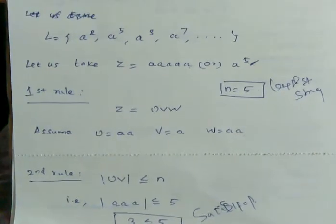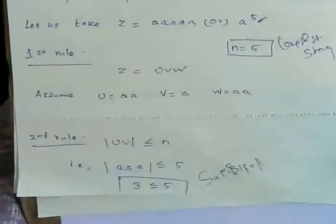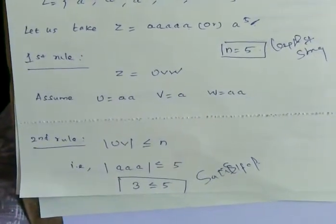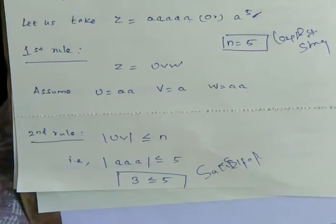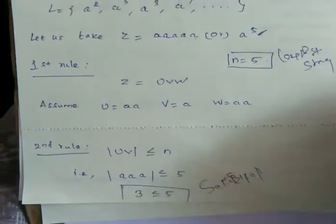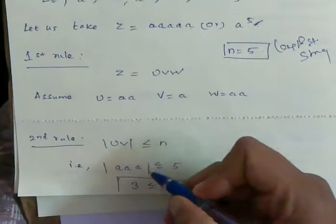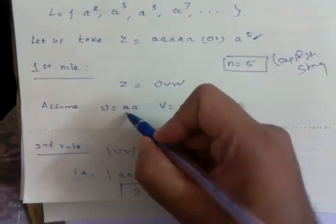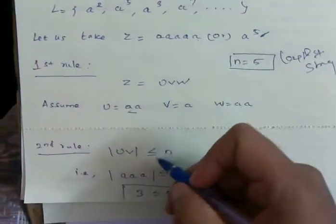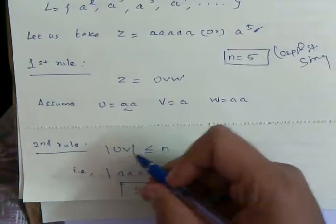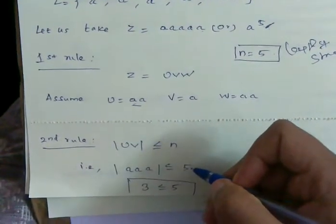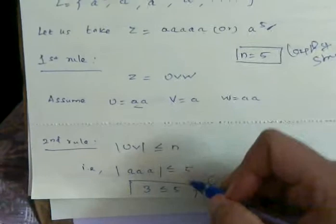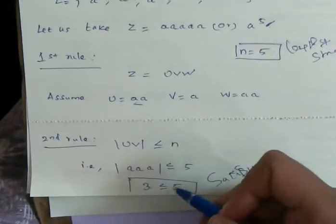The second rule is: |uv| is less than or equal to n. Here n equals 5, and |uv| equals 2, so 2 is less than or equal to 5 — satisfied.